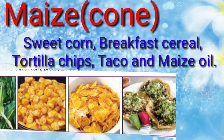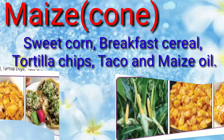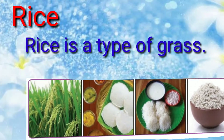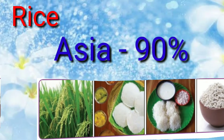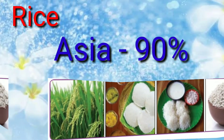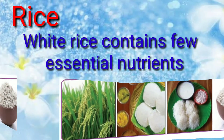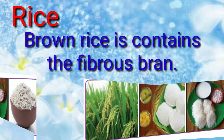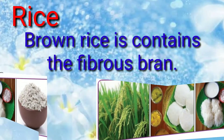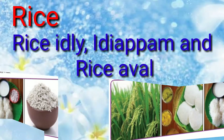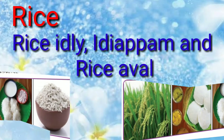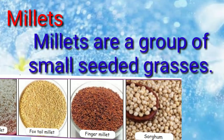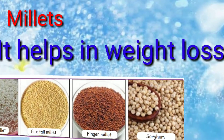Its products are sweet corn, breakfast cereals, tortilla chips, taco, and maize oil. Next is rice — rice is a type of grass. 90% of world rice production is in Asia. White rice contains few essential nutrients, while brown rice contains fiber and bran, making it more healthy compared to white rice. Some rice food items are idly, idiyapam, and rice aval.